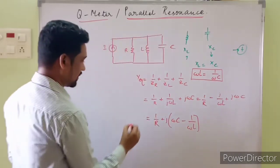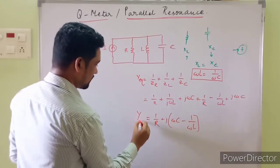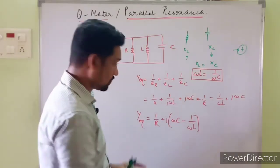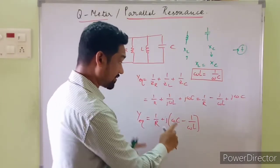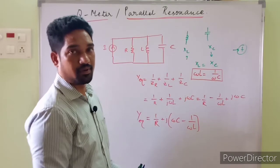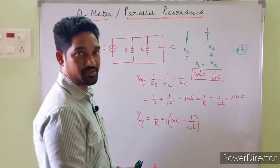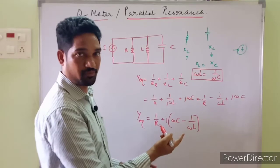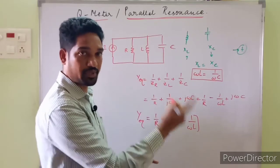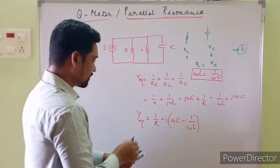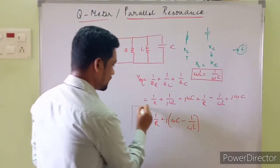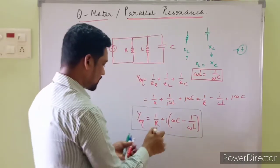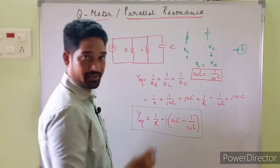So this is the equivalent admittance. What happens to this expression at resonance? The equivalent admittance of the circuit is this. What will happen to the equation at resonance? Come back to this expression.